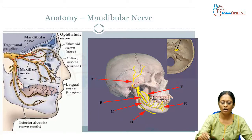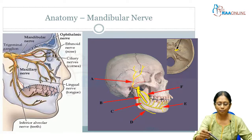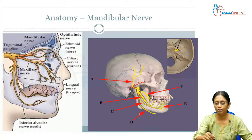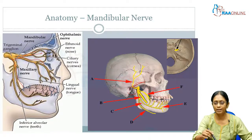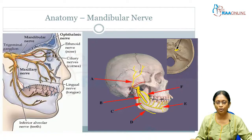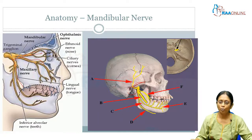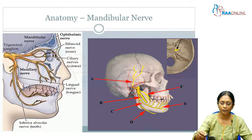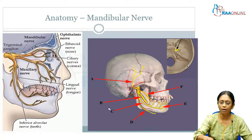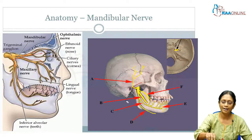The mandibular nerve has one undivided nerve branch that goes off to supply the nervus spinosus. Then we have the anterior and the posterior division. The anterior division gives off branches mostly to the muscles of mastication, except for one nerve — the long buccal nerve. So you have the masseteric, the deep temporal, the buccal (long buccal), and the lateral pterygoid. The posterior division includes the auriculotemporal nerve, the inferior alveolar, the lingual, and the mylohyoid — the mylohyoid being the one muscular nerve, all the others being sensory innervations.